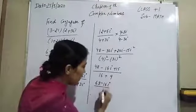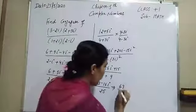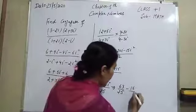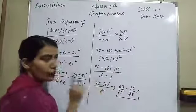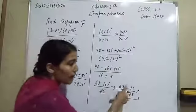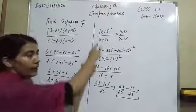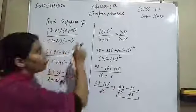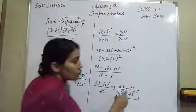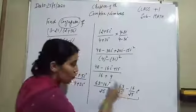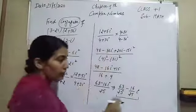So we have 63 minus 16 eta in the numerator, and the denominator is 16 plus 9, that is 25. This can be written as 63 over 25 minus 16 over 25 eta. That is a complex number. Its real part is 63 over 25 and its imaginary part is minus 16 over 25.